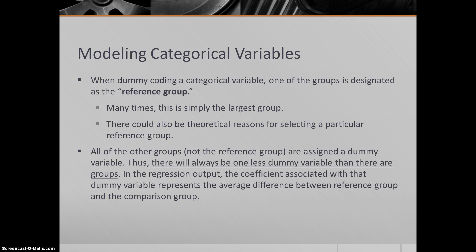When we are modeling a categorical variable using dummy coding, we have different groups, different levels of that variable. If it's color: red, blue, green. If it's gender: male, female. One of these groups, though, is going to be your reference group.